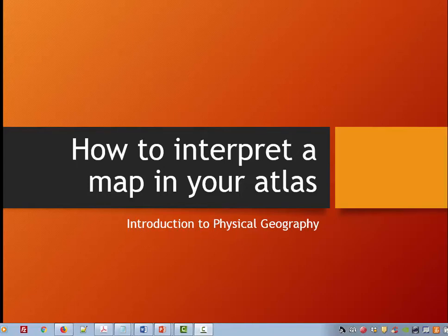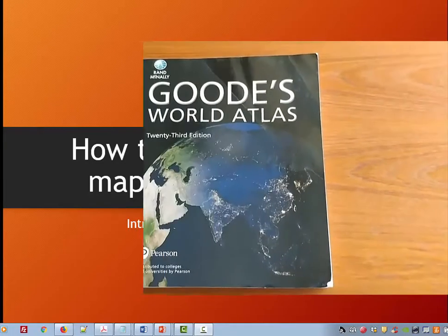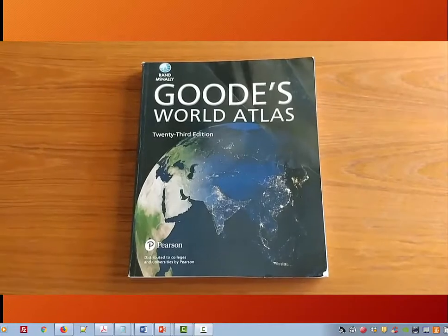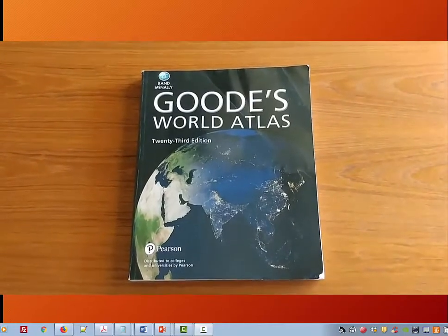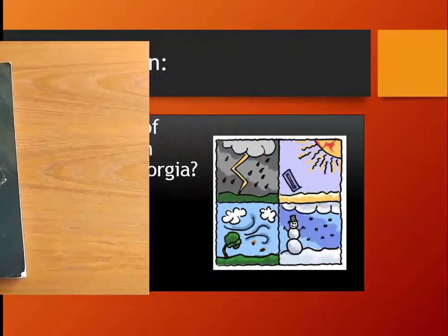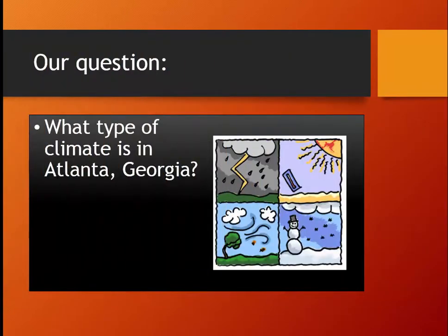Welcome to Physical Geography. In this short video I'm going to go over how to use your atlas to interpret a thematic map. Maps are one of geographers' primary tools. We are going to practice by answering the question: what type of climate is found in Atlanta, Georgia?